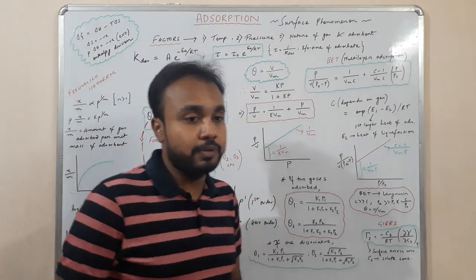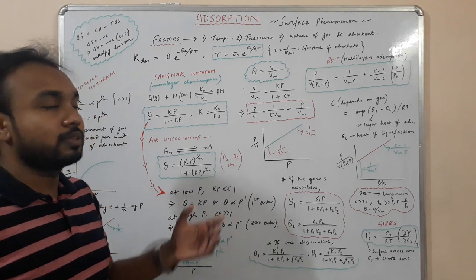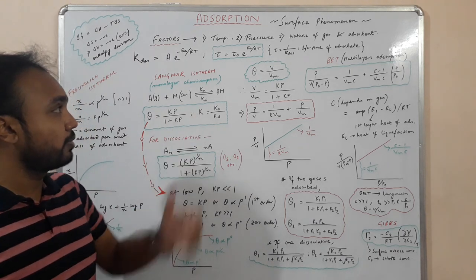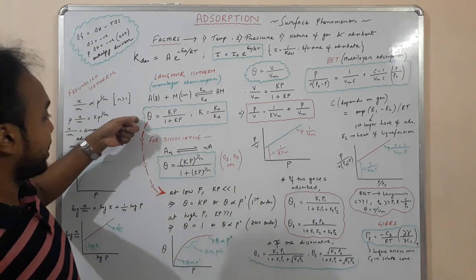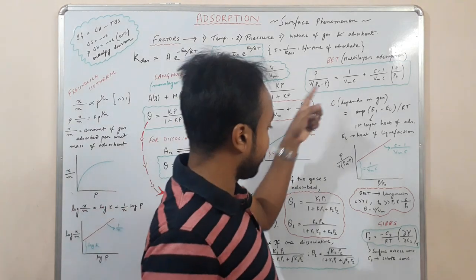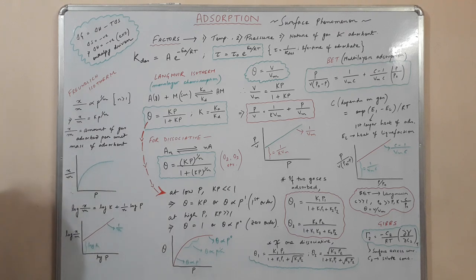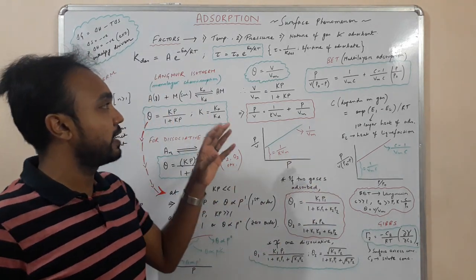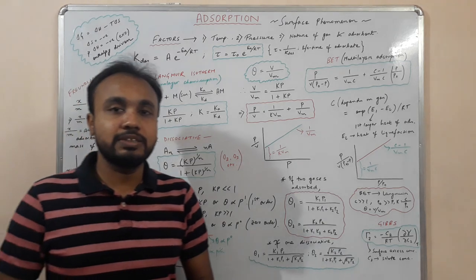That covers the adsorption chapter needed for your upcoming CSIR NET exam. I will make videos solving numericals based on these formulas. The key formulas to remember are: Langmuir adsorption, dissociative Langmuir, the linearized Langmuir form, BET equation, and Gibbs adsorption isotherm. You can take a snapshot for reference. In the next video, I will solve questions from past CSIR NET examinations.